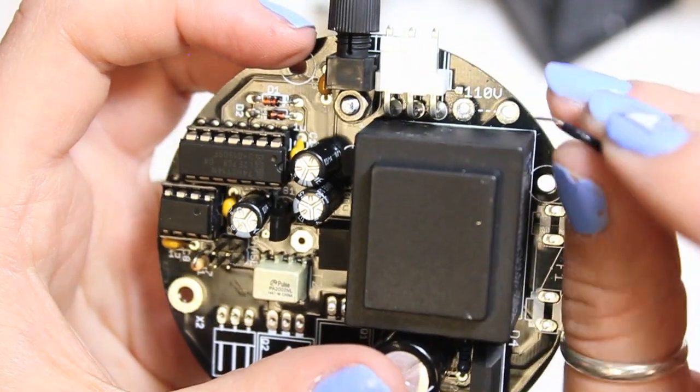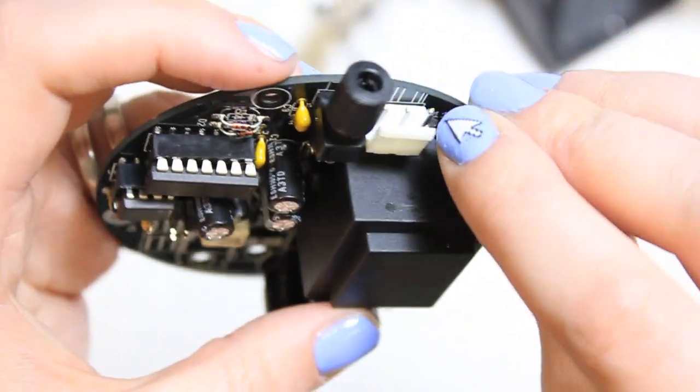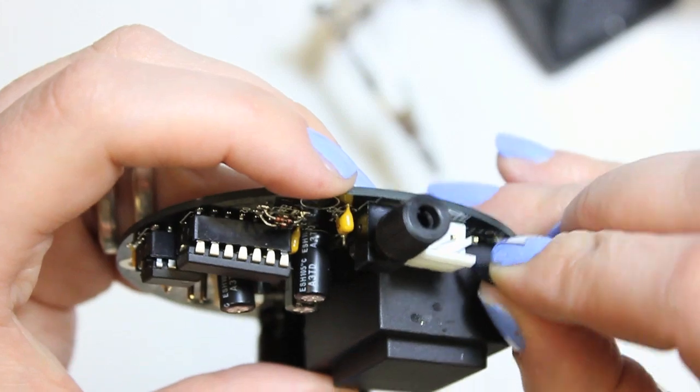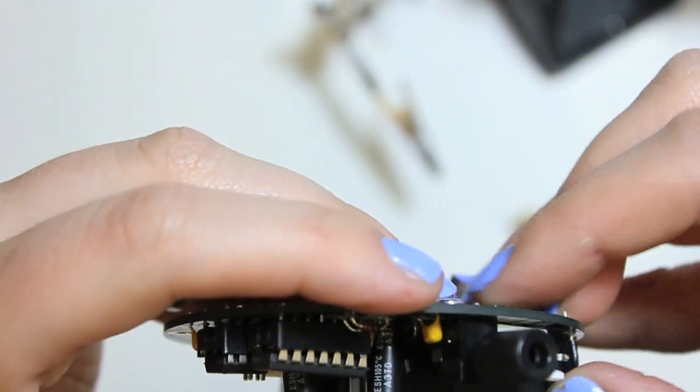Now if we're using a 110 volt kit you will also have to install a 110 volt jumper. If you're using a 220 volt kit, skip this step. Don't do it.